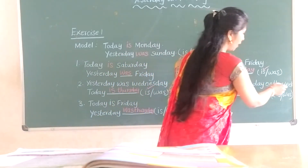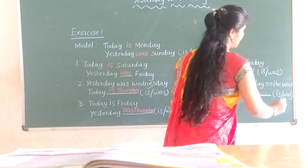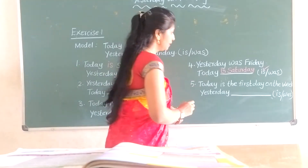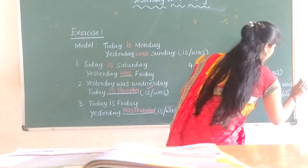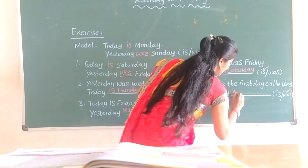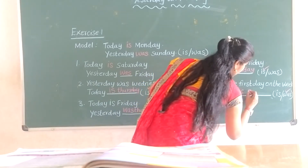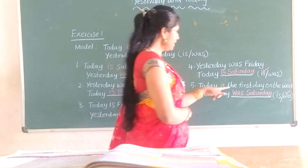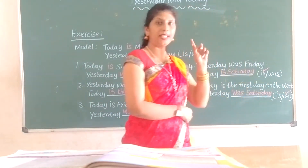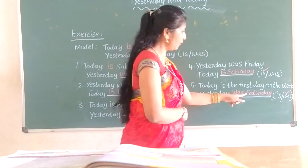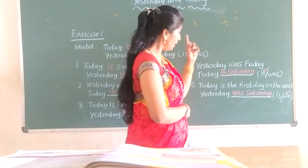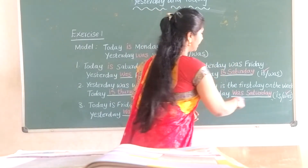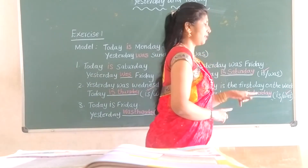Today is the first day of the weekend. Yesterday was Saturday. Today is the first day of the week — the first day is Sunday, so yesterday was Saturday. Yesterday means 'was', understood?